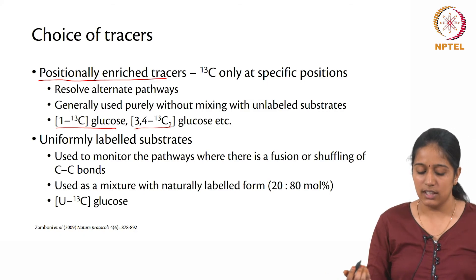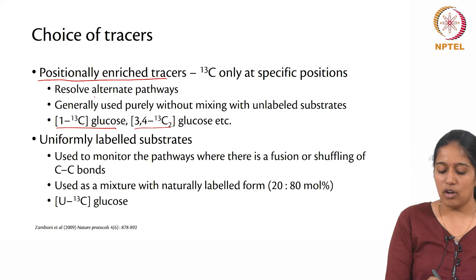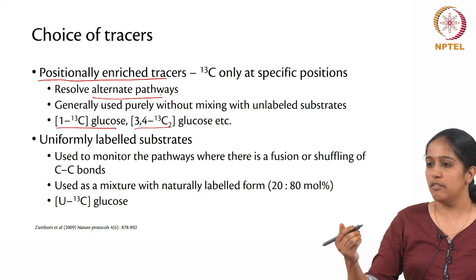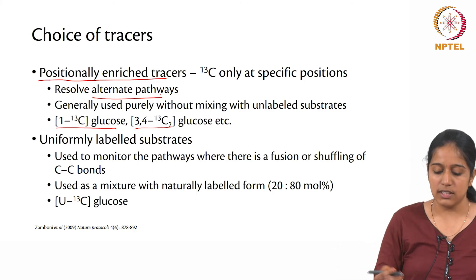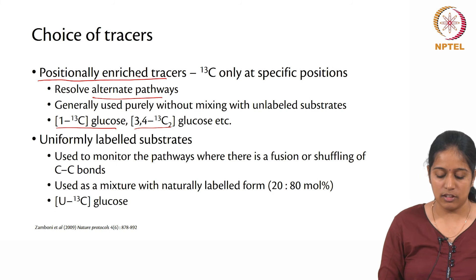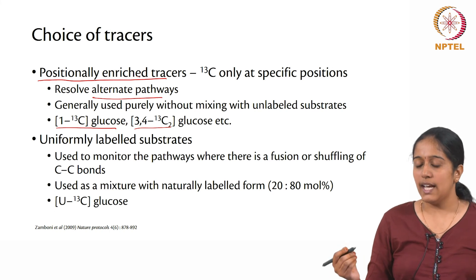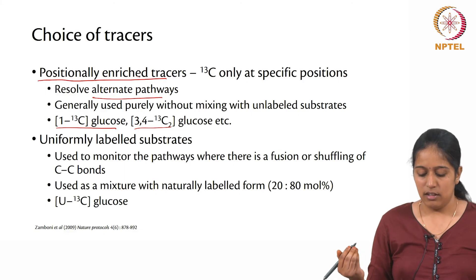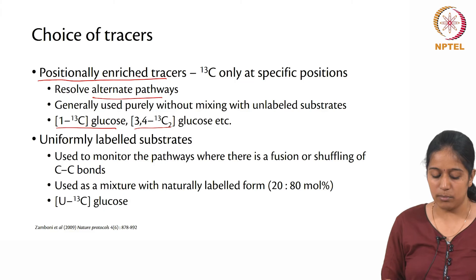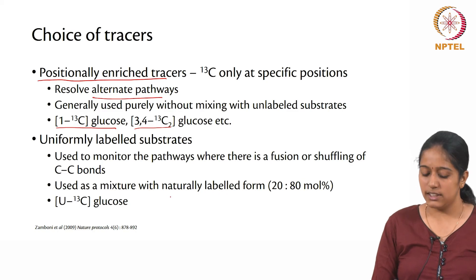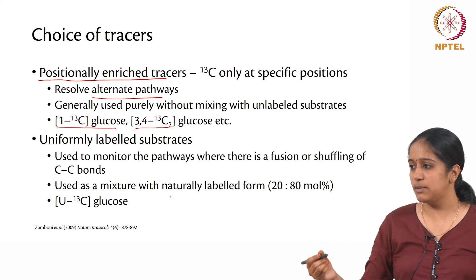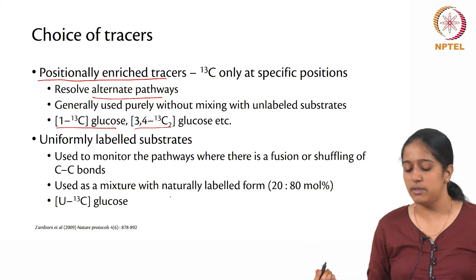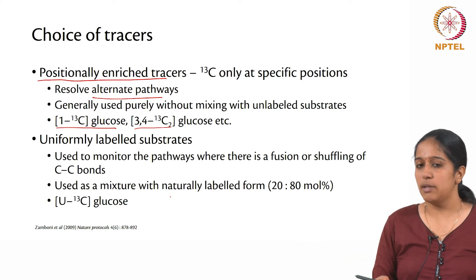For instance, glucose labeled in the first position (1-C13) or glucose labeled at positions 3 and 4 — these positionally enriched tracers are generally used to resolve alternate pathways. Whereas when you want to monitor the activity of different enzymes that form or shuffle carbon-carbon bonds, you might use uniformly labeled substrates. This uniformly labeled substrate is generally used in a mixture of 20:80, where you have 20% uniformly labeled substrate and 80% non-uniformly labeled substrate, simply because these tracer experiments are really expensive.